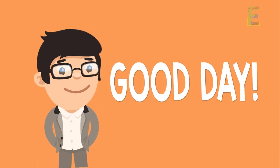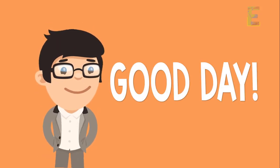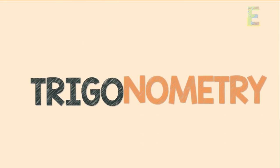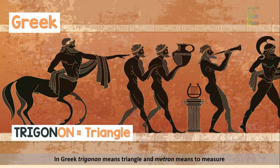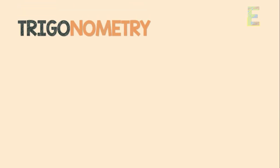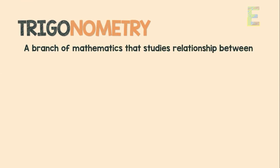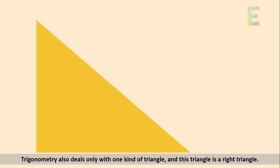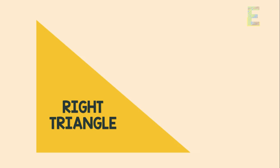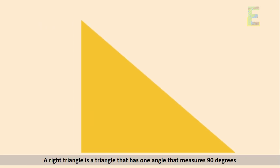Good day learners, this is Earth Pen. For today's topic we are going to talk about trigonometry. In Greek, 'trigonon' means triangle and 'metron' means to measure. Therefore, trigonometry is a branch of mathematics that studies the relationship between side lengths and angles of triangles. Trigonometry deals with one kind of triangle only, and this is a right triangle.